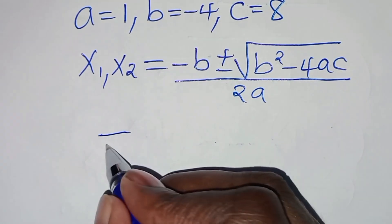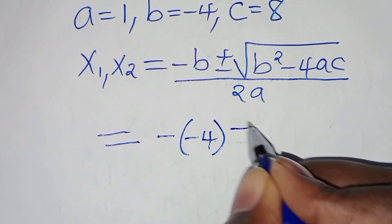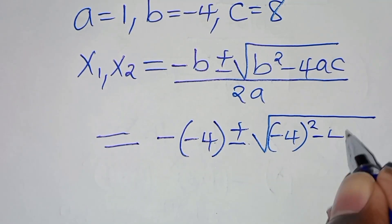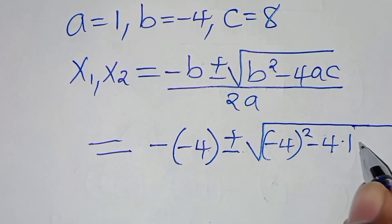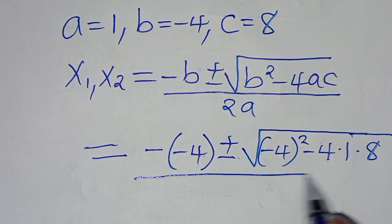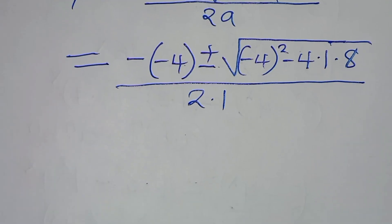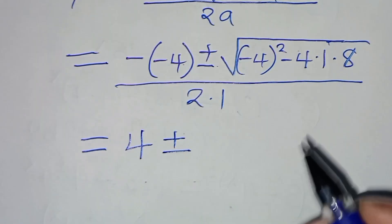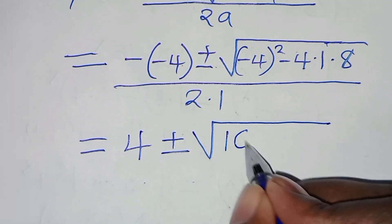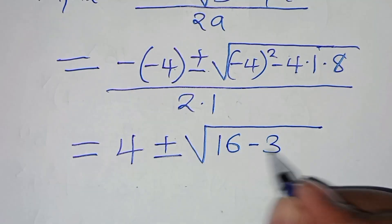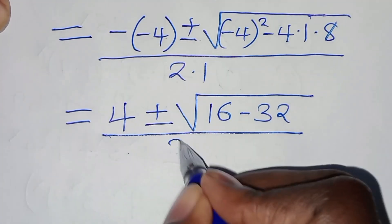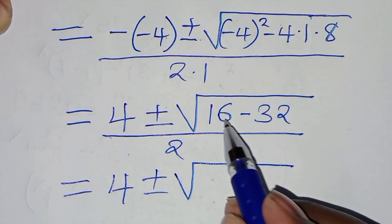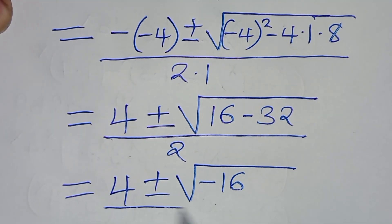So this implies that we have minus minus 4, plus or minus the square root of b squared, which is minus 4 squared, subtract 4 times a, which is 1, times c, which is 8, everything divided by 2 times 1. So this implies we have 4, plus or minus the square root of minus 4 squared, which is 16, minus 8 times 4, which is 32, divided by 2. This gives us 4, plus or minus the square root of 16 times minus 1, divided by 2.